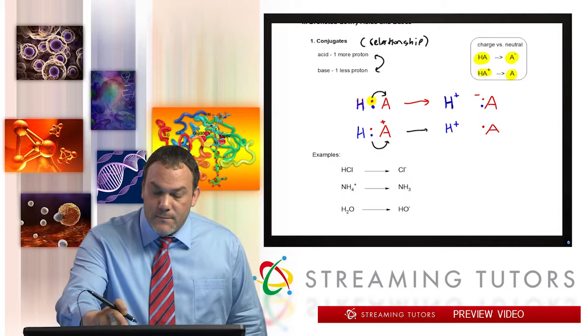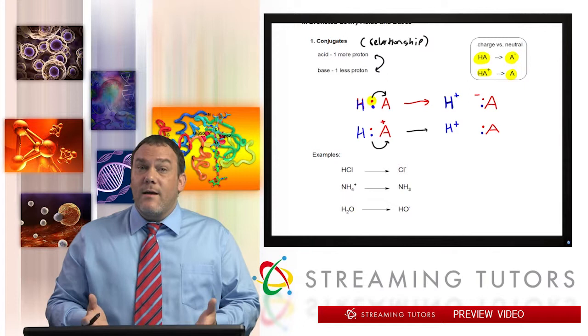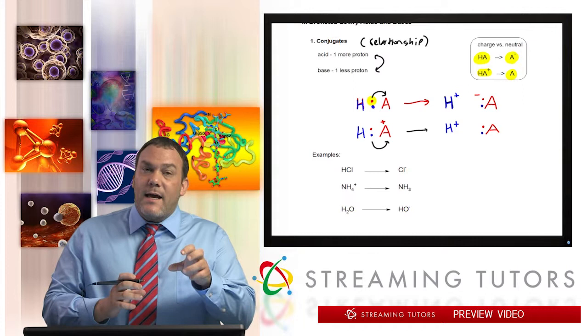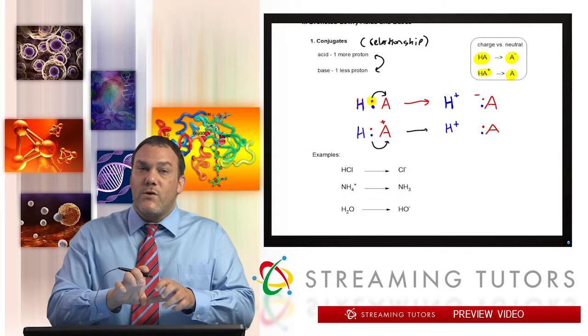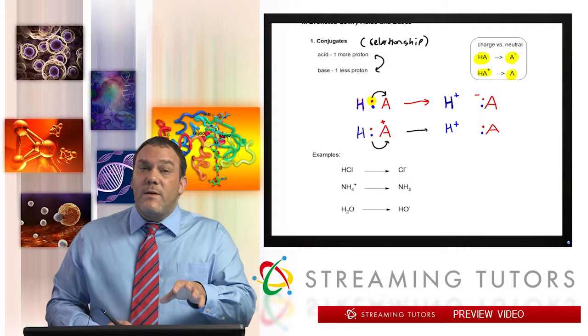So what happens if A takes both electrons to itself? So now, H is positive again, because it lost its electron, has an extra plus in the middle, has a plus in the middle with no electron on the outside to stabilize, to counter it. But what happened to A? Well, A now owns two electrons.